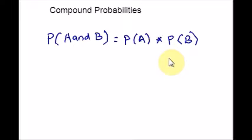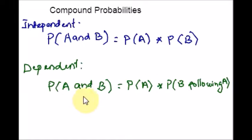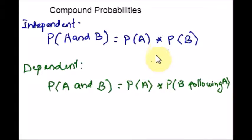So in this case, events are independent. When the events are dependent, then the compound probability can be calculated using this formula: probability of A and B is probability of A times probability of B given A. These are the cases when both parts of the compound events are true.